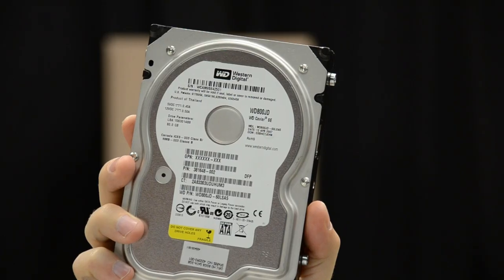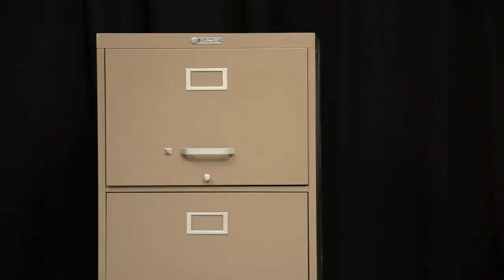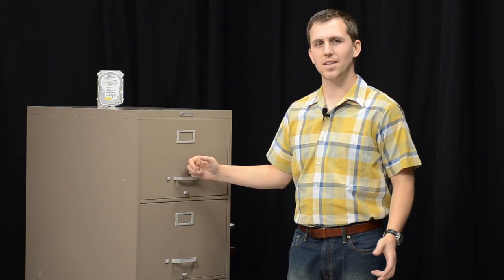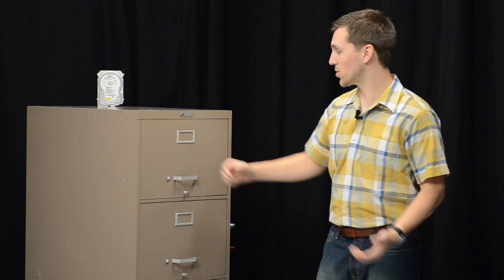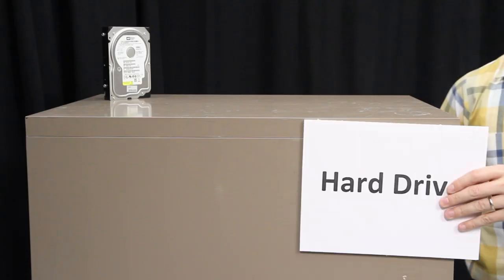But this still doesn't explain things like MBRs, journals, and file systems. For that, we're going to turn to another storage device that's a little bit easier to understand. The filing cabinet has a lot of similarities with your hard drive. They both store important information, they both share a lot of the same key components, and they're both magnetic.